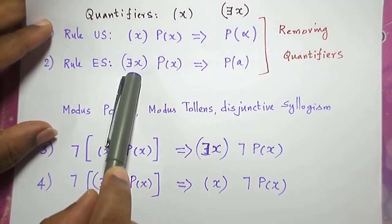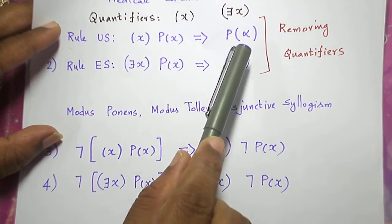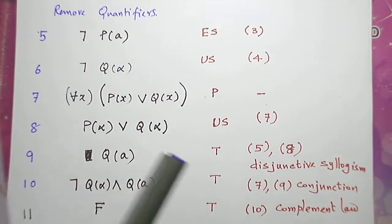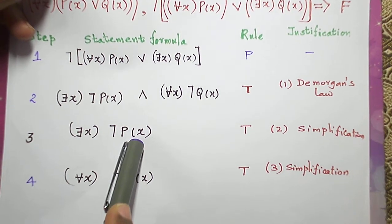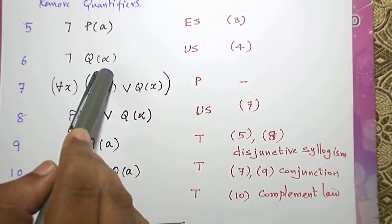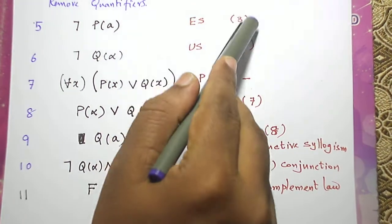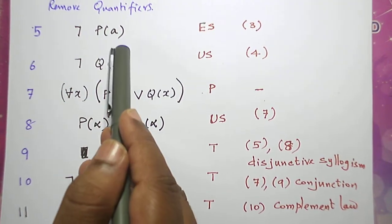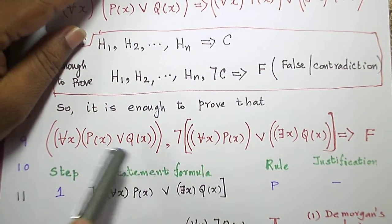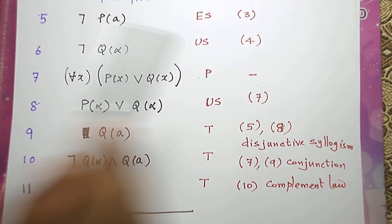For removing quantifiers I told you we apply rule US or rule ES. When we have a there exists x quantifier we remove it using an English alphabet letter. When we have a for all x quantifier we remove it using Greek letters — this is our customary way. So English alphabet and Greek alphabet are used with rule ES and rule US for steps three and four. Now let me introduce the other premise that involves p or q: for all x, p(x) or q(x). This is introduced using rule P, which needs no justification.